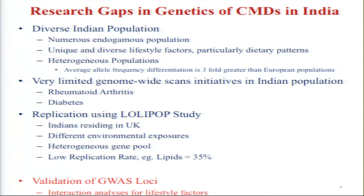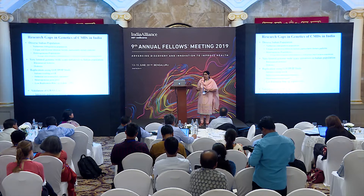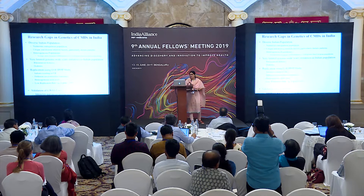We have limited genome-wide scans for things like rheumatoid arthritis, diabetes, and some cancers, but not for many cardiometabolic outcomes. In a genome-wide association study you are required to replicate discovery phase findings in different populations. Most samples used as Indian representatives in previous GWAS are Indians residing in the UK, in the LOLIPOP study, which have very different environmental exposures than people living in India, and even then replication rates have been very low — for lipids, replication rates were as low as 35%. We should not blindly follow what is done elsewhere; we should validate GWAS findings before using them as instruments in our population, and explore how effect sizes modify with interactions with lifestyle factors.